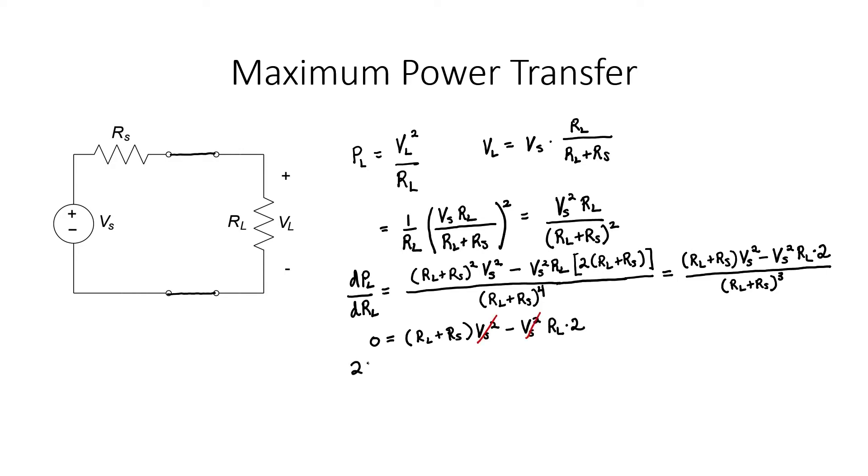The voltage cancels from these two terms. We're then left with a single equation. If I have a voltage source with a source resistance R sub S, in order to transfer the maximum amount of power from the source to the load resistor, I should choose a load resistor that's equal to the source resistor.